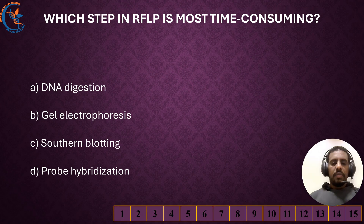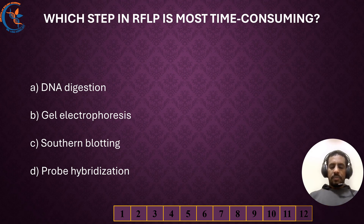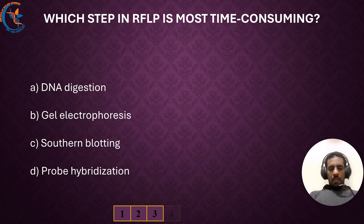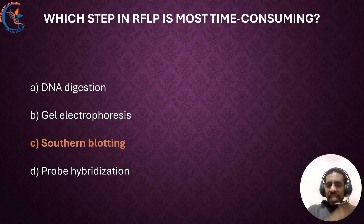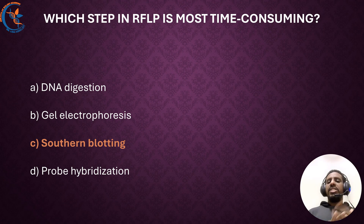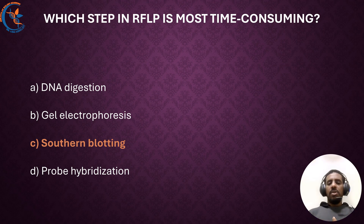Which step in RFLP is most time-consuming? The most time-consuming step in RFLP is typically Southern blotting. This step involves transferring DNA fragments from a gel to a membrane through capillary transfer, which often takes overnight. DNA digestion and gel electrophoresis take only several hours, and hybridization requires additional time, but Southern blotting remains the most labor-intensive step.